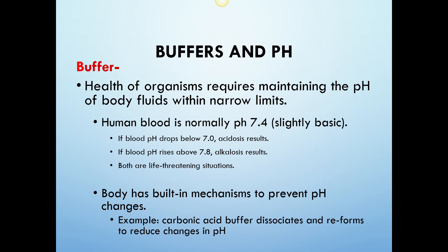Buffers do a pretty good job keeping a steady pH, especially in living organisms. The health of organisms requires maintaining the pH of body fluids within narrow limits. Human blood is usually about pH 7.4, between 7.35 to 7.45. If the blood pH drops below 7, acidosis results—the patient slips into a coma and could potentially die. If the pH rises above 7.8, alkalosis results—the patient starts slipping into a coma and could die.